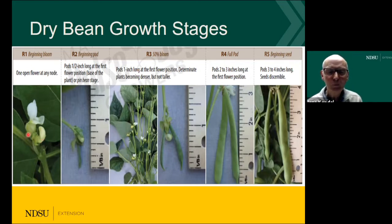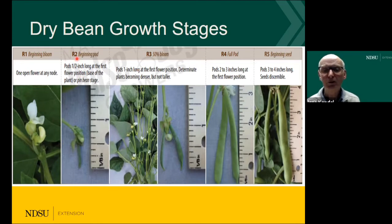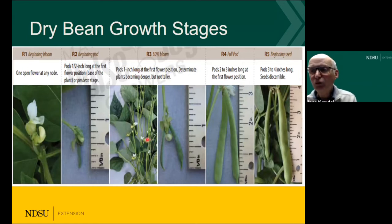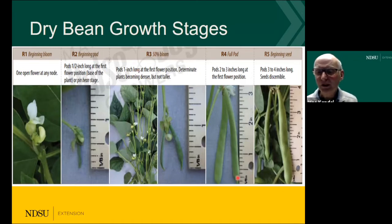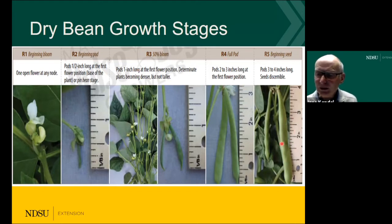After pollination has taken place, we see the development of the pod. A half-inch pod at the first flower indicates we have moved into R2 — the beginning of the pod phase. R3 is when about 50 percent of the plant has been blooming and we are moving to pod formation. The pod starts to become bigger, and as you can see in this picture, the pod on the right is about three-plus inches long — that full pod stage is R4. Looking at the next slide, you see swelling within the pod and the seed beginning to develop.